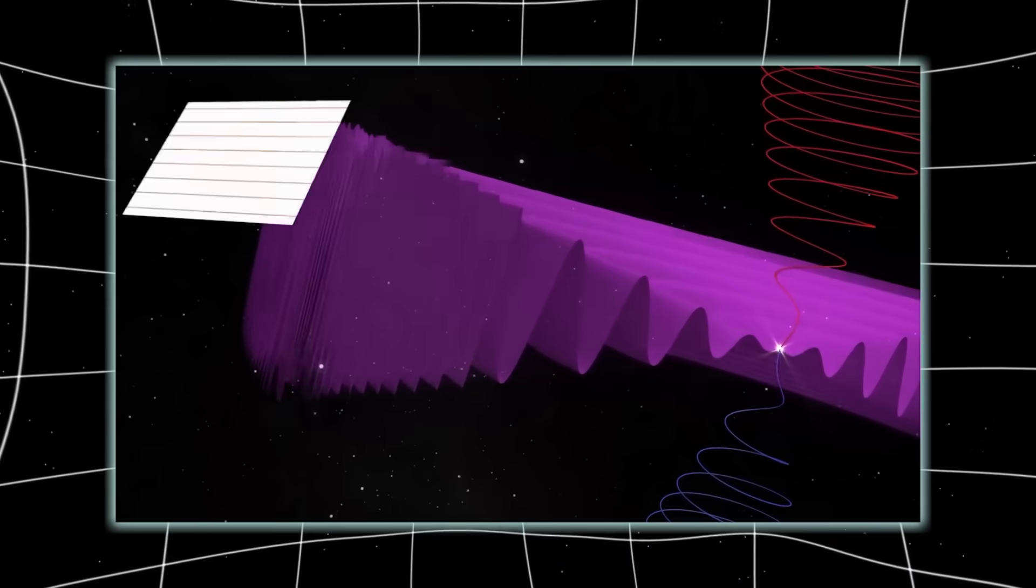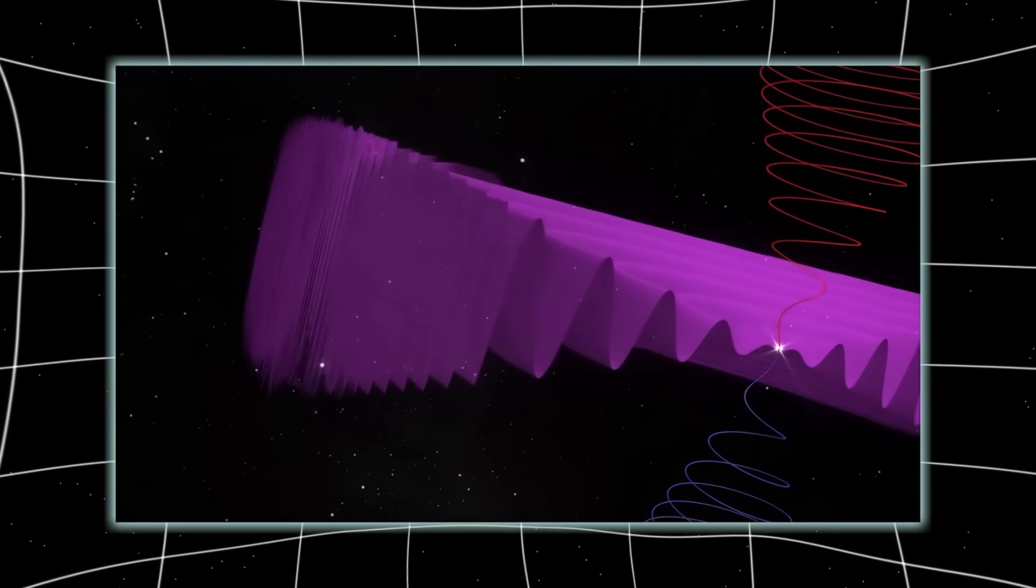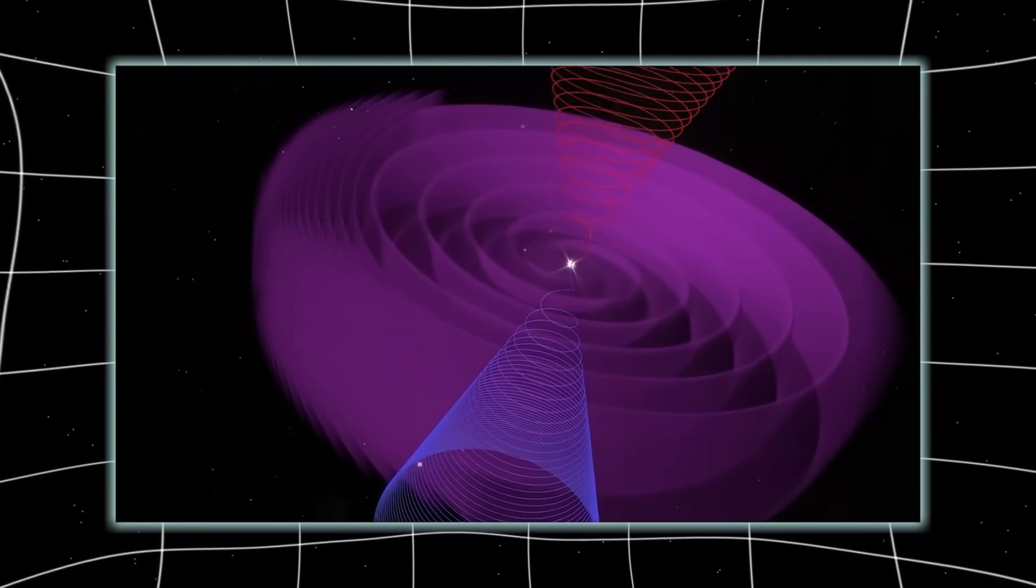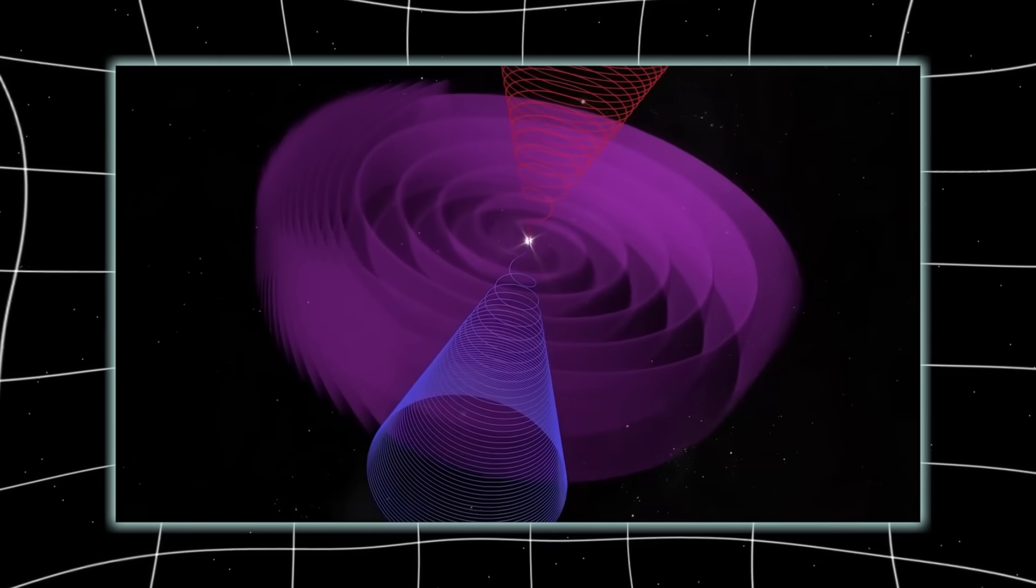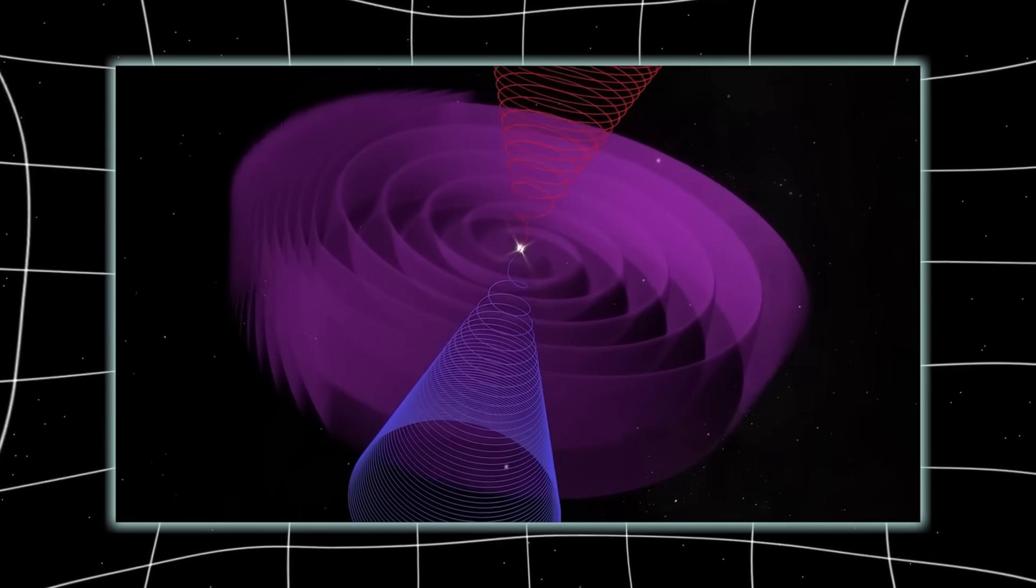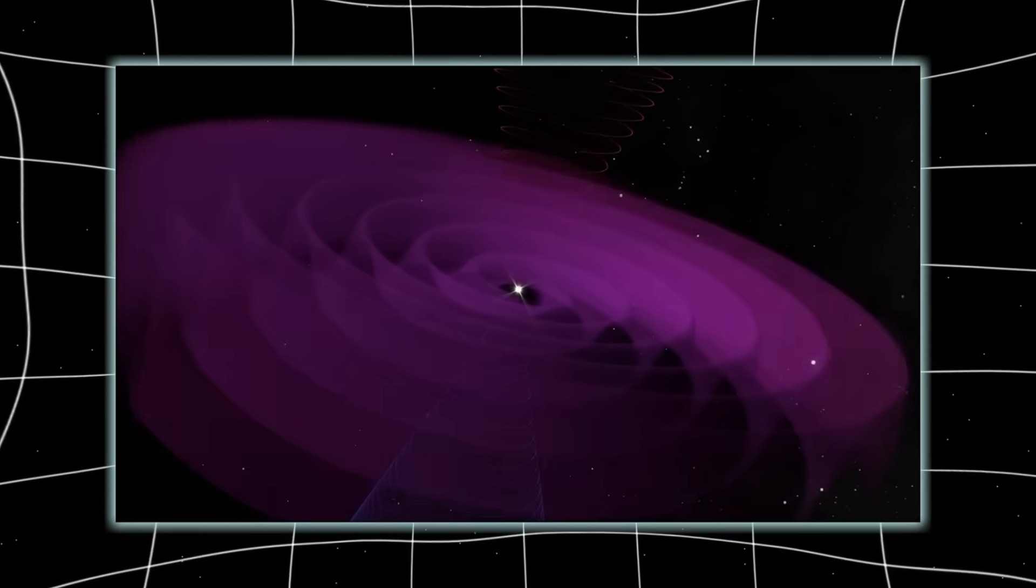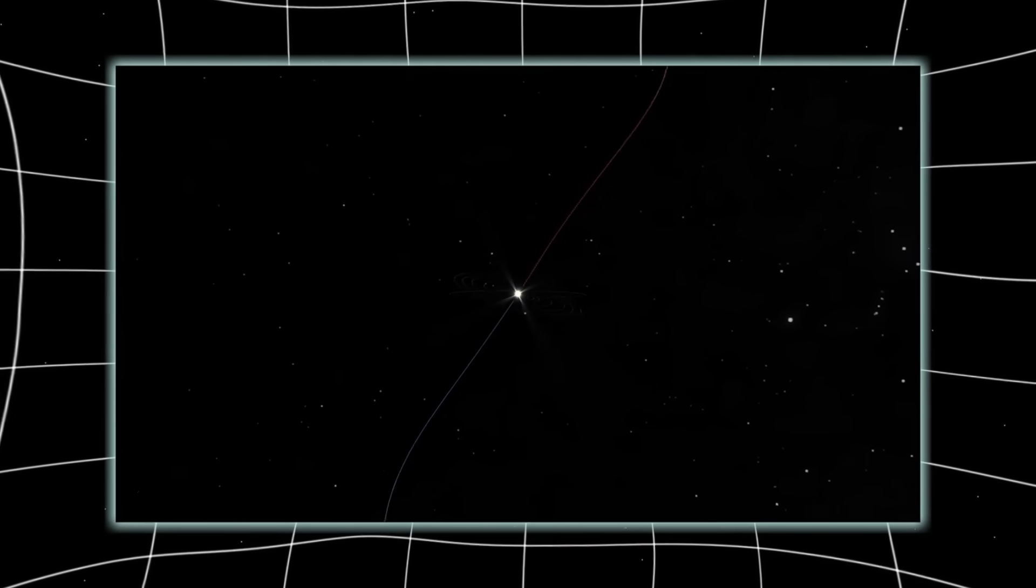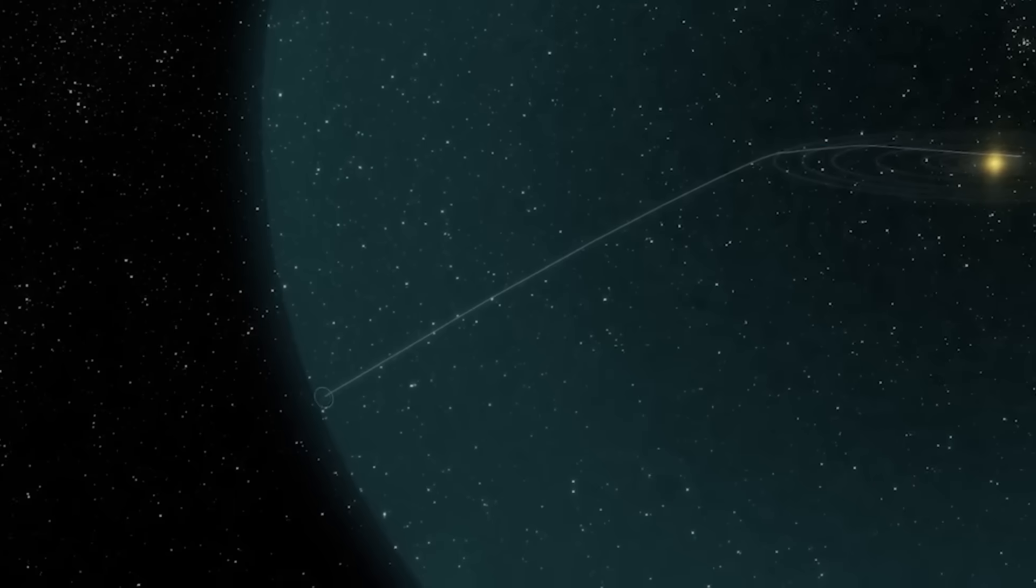This means that the boundary of our solar system isn't a neat sphere. It's distorted, almost comet-shaped, with pulses that ripple outward like the breath of a giant organism. At times it stretches. At times it recoils. And if the solar wind weakens, the boundary draws closer to home, allowing more galactic radiation to seep inside. If it strengthens, the barrier pushes outward, shielding us more effectively.